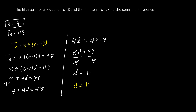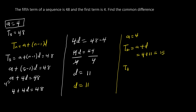To do a kind of check: if a = 4 and d = 11, then T2 = a + d = 4 + 11 = 15. You can try to generate T3, T4, T5 for this particular sequence to verify the answer.